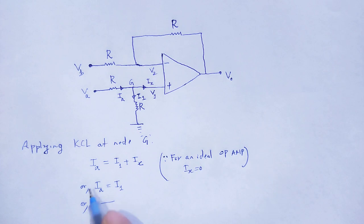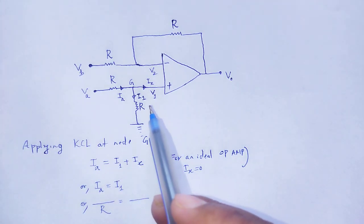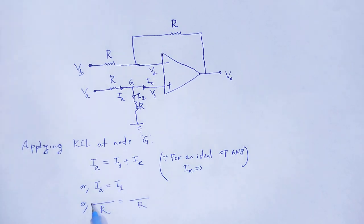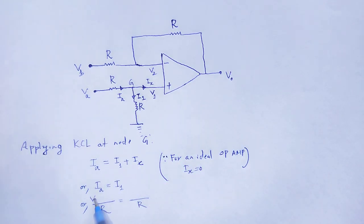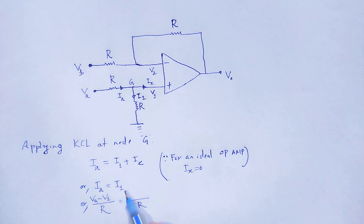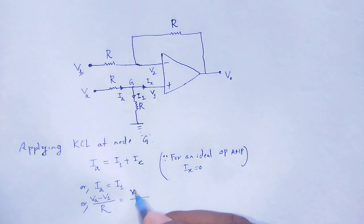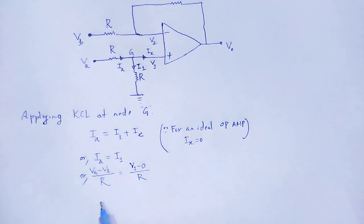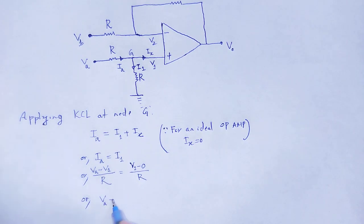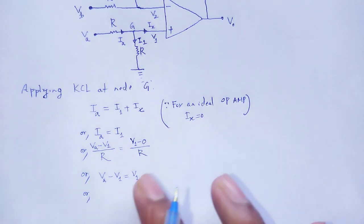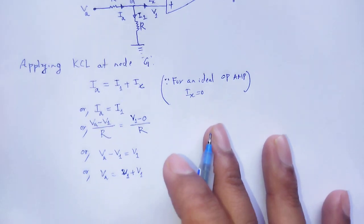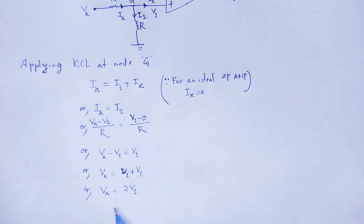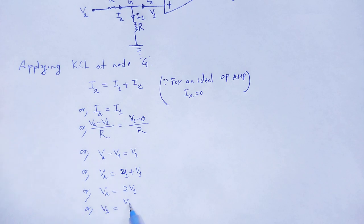Using Ohm's law: the resistance used for ia and i1 are both R. The potential difference to flow current ia is Va minus V1. To flow current i1, the potential goes from V1 to ground, so V1 over R. The R cancels out, giving Va minus V1 equals V1, so Va equals 2V1, therefore V1 equals Va divided by 2. Let this be equation number one.